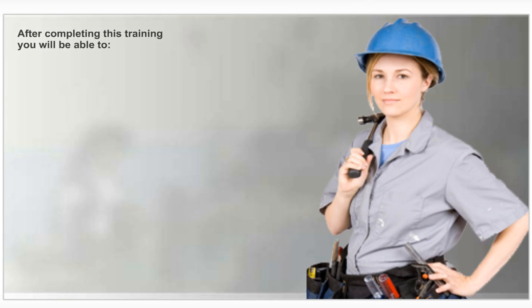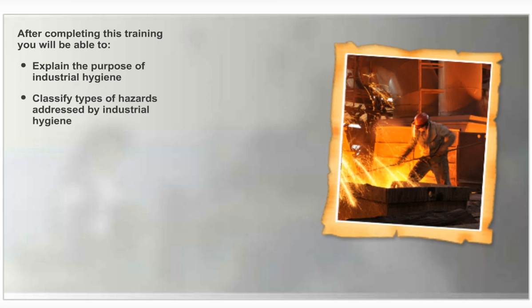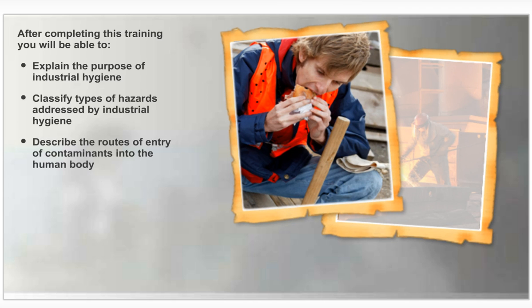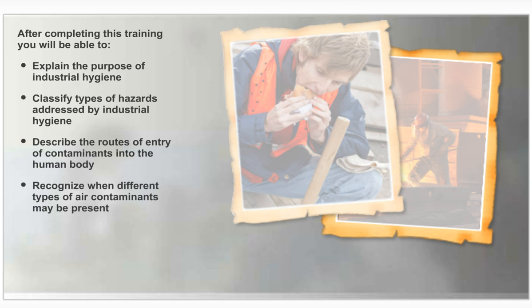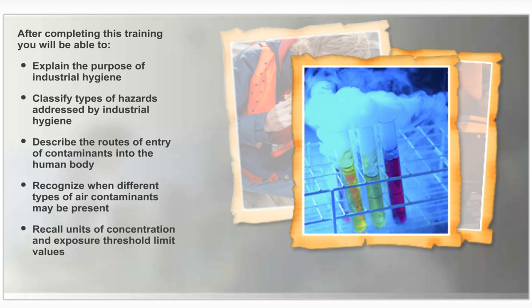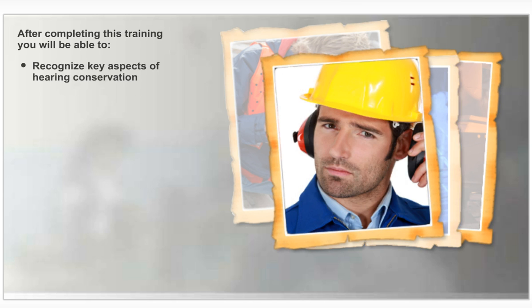After completing this training, you will be able to explain the purpose of industrial hygiene, classify the types of hazards addressed by industrial hygiene, describe the routes of entry of contaminants into the human body, recognize when different types of air contaminants may be present, recall units of concentration and exposure threshold limit values, and recognize key aspects of hearing conservation.